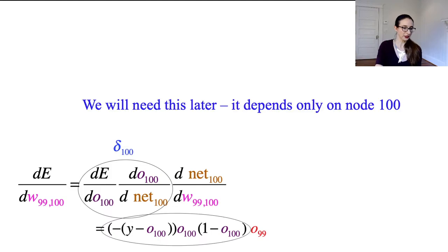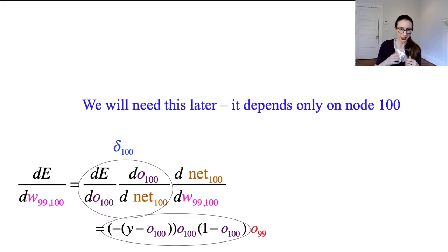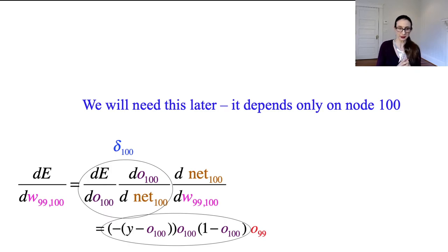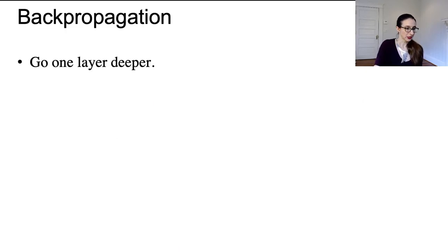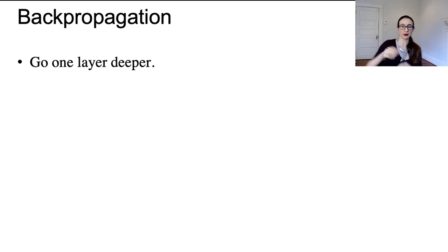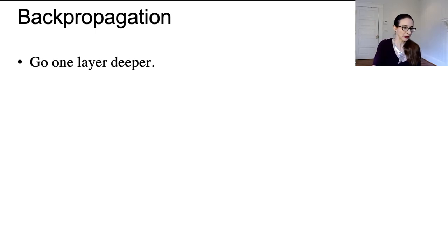I want to call that quantity delta100. The reason I'm giving it a special name is because that term depends only on node 100 — the only quantities in there are O100 and Y. Delta100 is the derivative of E with respect to net100, so let's keep that around. Now we're going to go one layer deeper. Now that we've computed all of the derivatives with respect to the weights on the last layer, we'll compute the weights on the second-to-last layer, using the computations from the last layer — propagating information backward through the network.